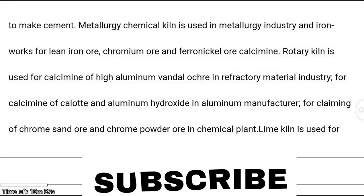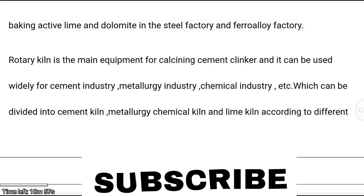Rotary kiln is used for calcining high-alumina bauxite, ochre, and refractory materials including calcium aluminate and aluminum hydroxide. Manufacturers use it for calcining chrome sand ore and chrome powder ore. Lime kiln is used for baking active lime and dolomite in steel factories and ferroalloy factories.